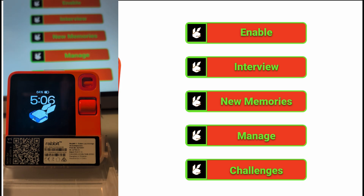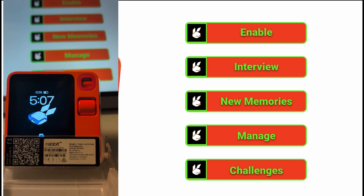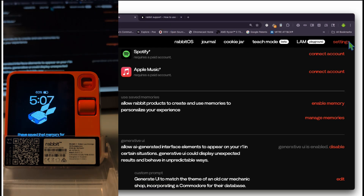That's the memory interview — not too bad. After enabling memory and completing the interview, your R1 will automatically create new memories as you interact with it. You can save a memory by pressing the side button and saying something like 'remember this about me.' Testing it: 'Hi Roger, can you save this memory — I drink Diet Coke, that's my favorite soda.' Roger responds: 'On it — saving a note about favorite soda. I have saved that memory for you: you drink Diet Coke, that is your favorite soda.'